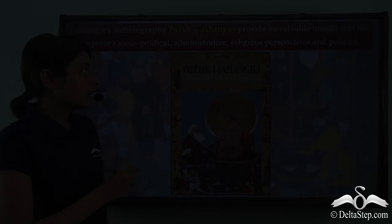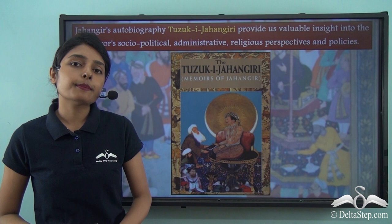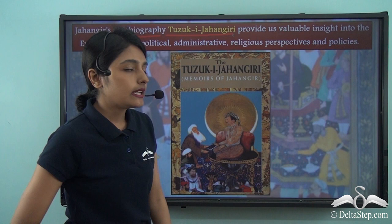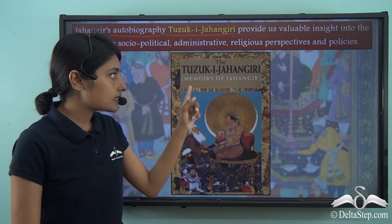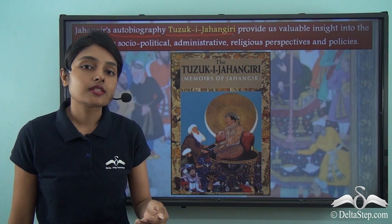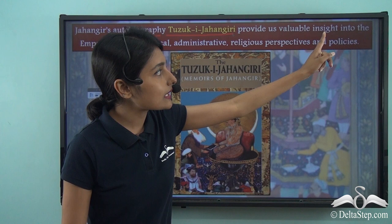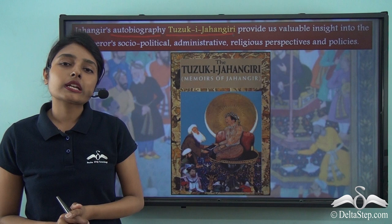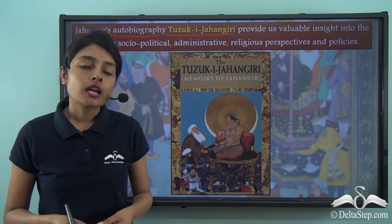To understand Jahangir's rule, his policies, and military campaigns, we can turn to his autobiography known as the Tuzuk-i-Jahangiri. Until 1622 it was Jahangir himself who wrote this book; subsequently, other men in the Mughal court were given the task of continuing it. The Tuzuk-i-Jahangiri provides valuable insight into the emperor's socio-political, administrative, and religious perspectives and policies, making it a crucial source of information for students of history.